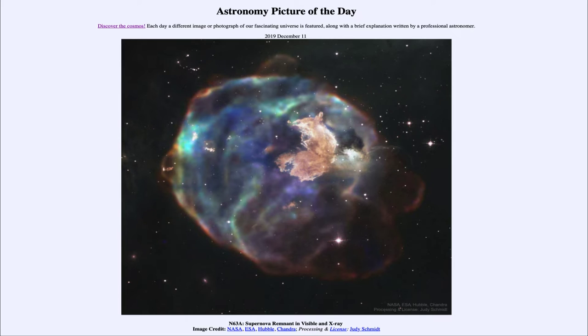A supernova occurring within 50 or so light years of another planet would be able to wipe out life on that planet. A supernova within that distance of Earth, certainly within 50 light years, would be able to wipe out life, and even within 100 light years could cause significant extinction events.